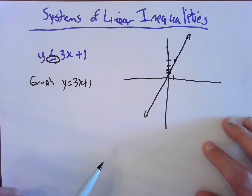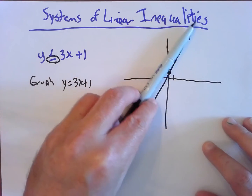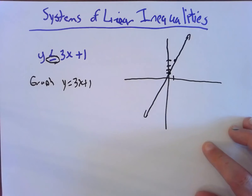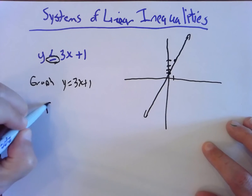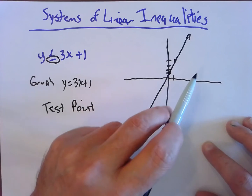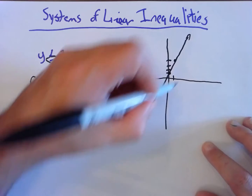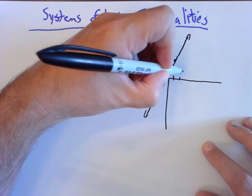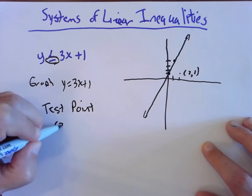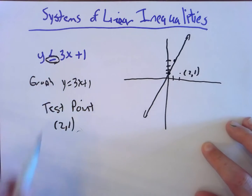That's the line y equals 3x plus 1. Now I want to shade either everything above the line or everything below the line. The typical way we do this is with a test point — we pick a point that's clearly not on the line. I'll pick the point (2, 1).